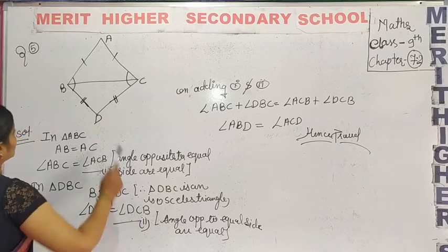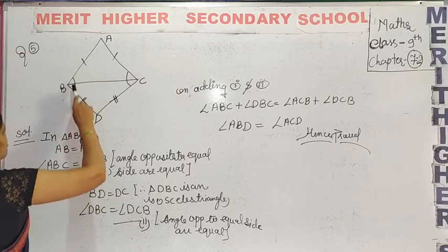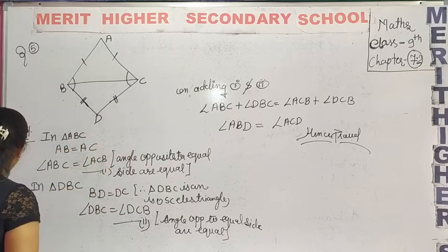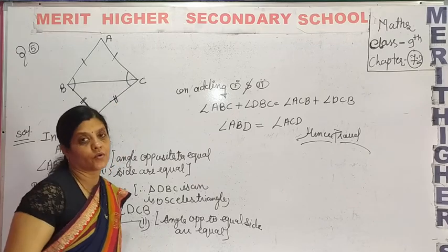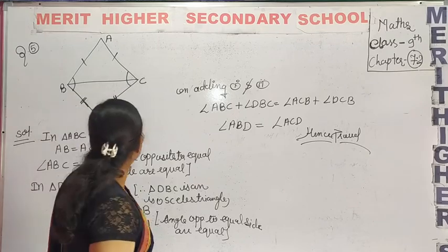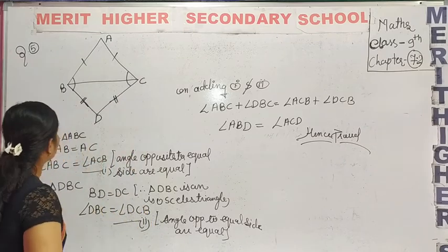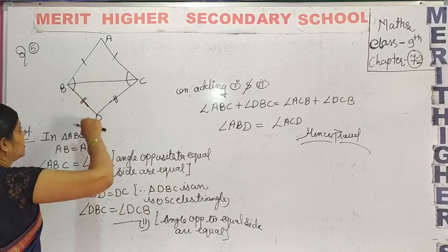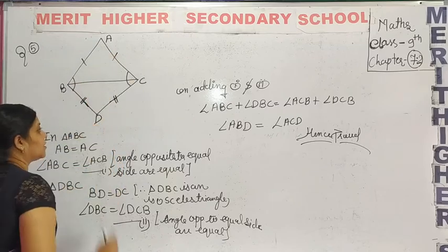So, the triangle ABD — which triangles are we looking at? Triangle ABD and triangle ACD. These two triangles should be proved equal. What do we need to do? We need to show triangle ABD is equal to triangle ACD.